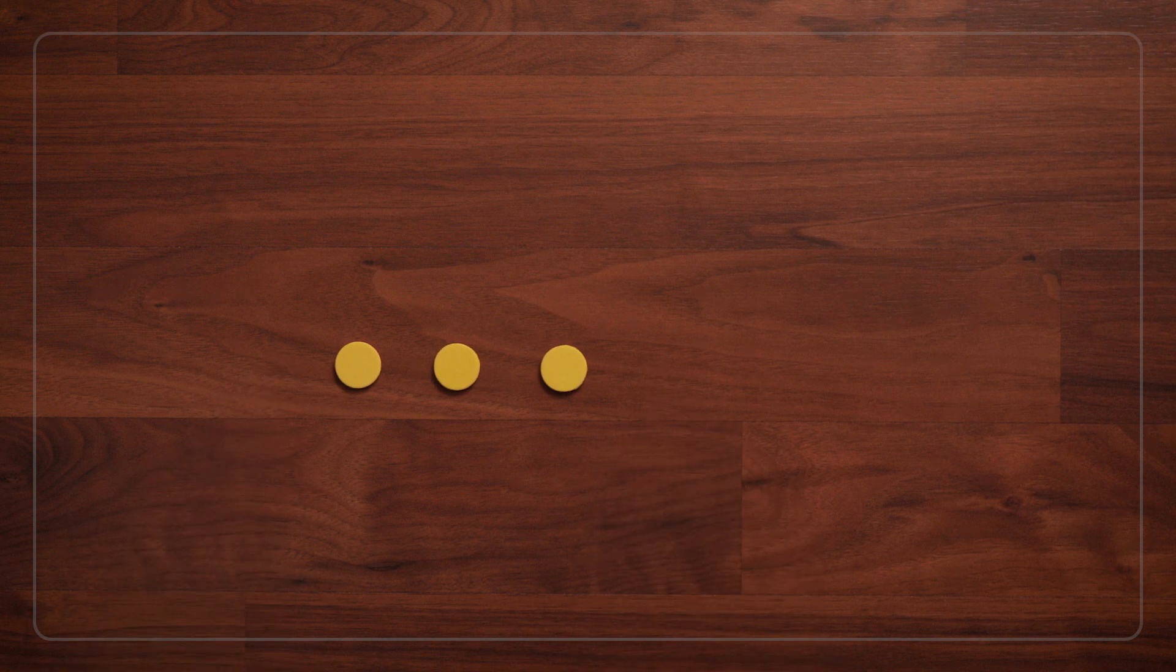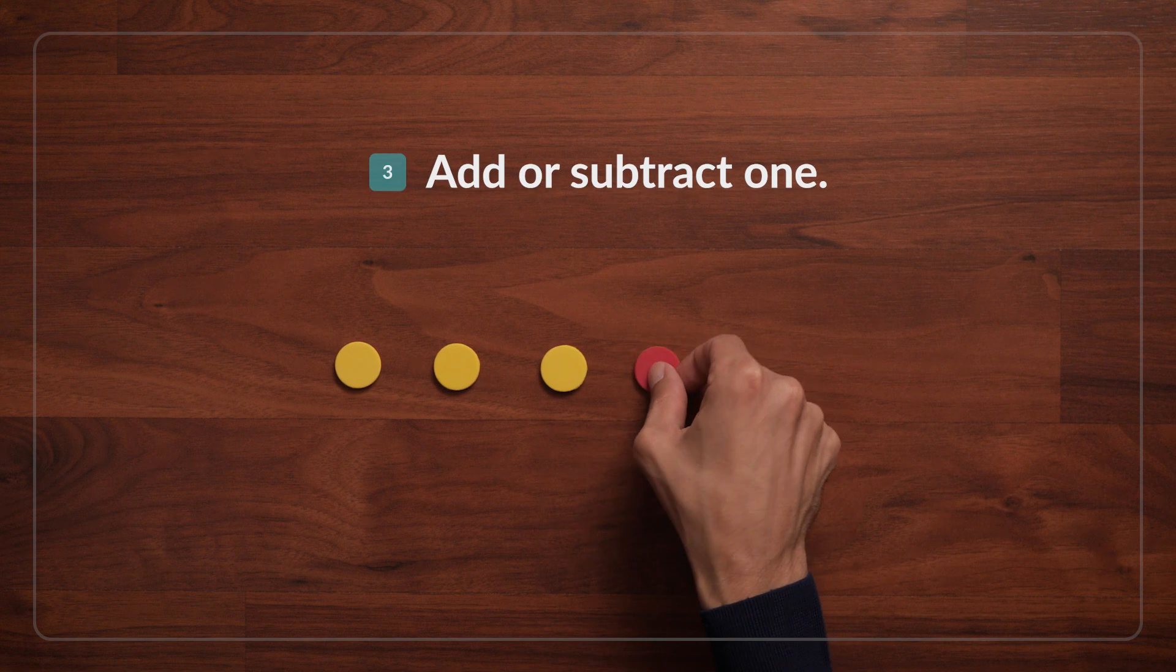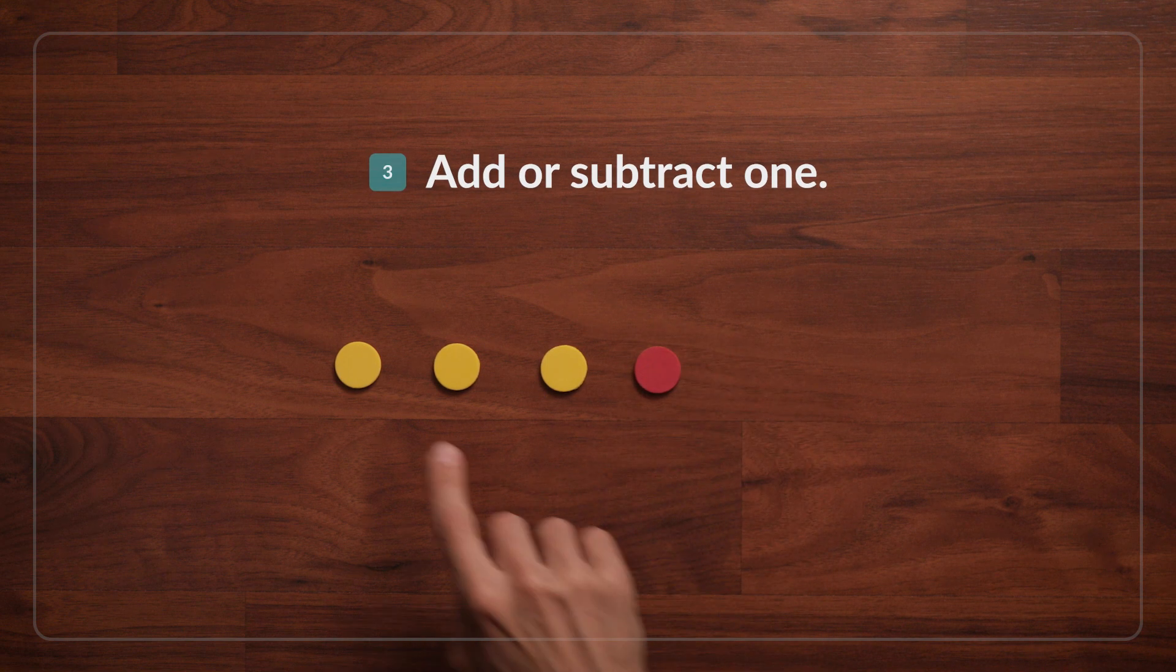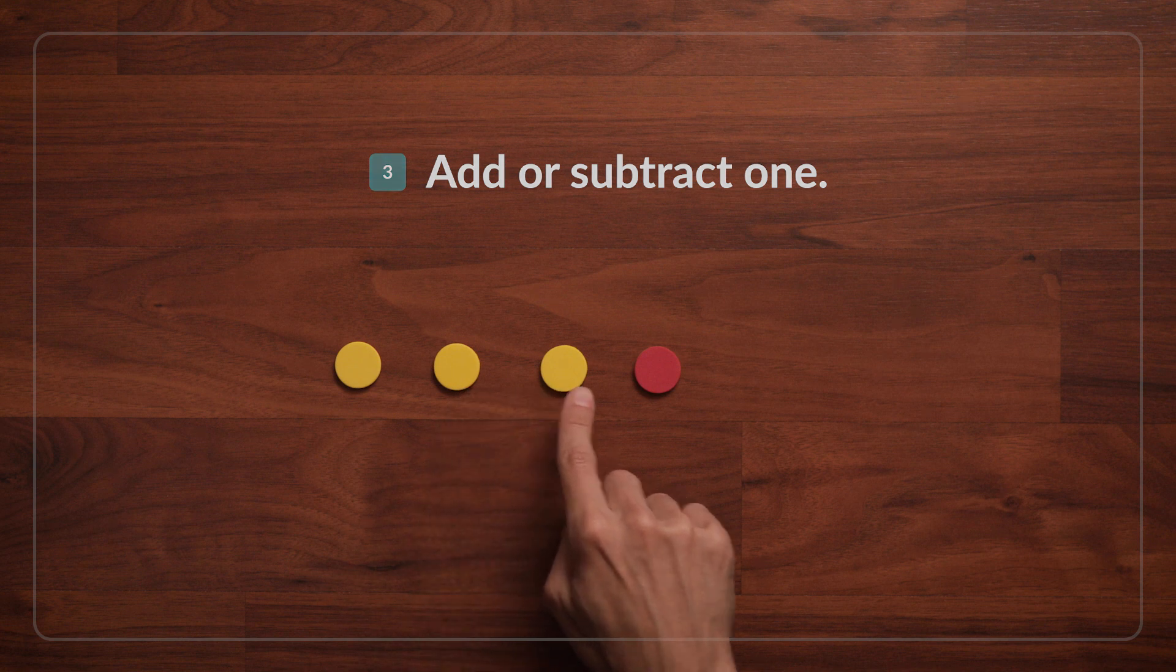In this case, three tokens. And when kids are ready, you can ask, what would happen if I added one more? Then how many would I have? One, two, three, four.